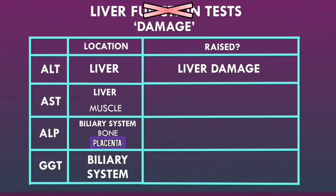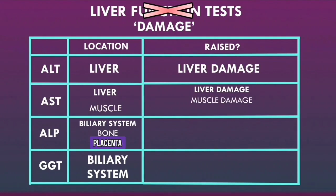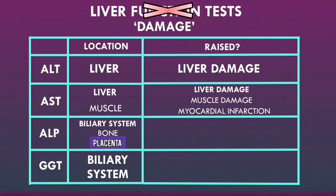The AST enzymes are also found within the liver, so when there is liver damage, AST will also be raised. But unlike ALT, AST is not only found in the liver — AST levels can also increase with muscle damage. For example, in rhabdomyolysis, which refers to skeletal muscle breakdown, or in a myocardial infarction, since AST is found in cardiac muscle as well. So AST is not as specific for liver damage as ALT.